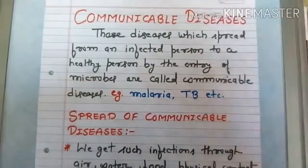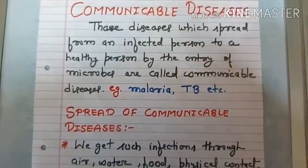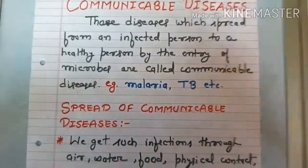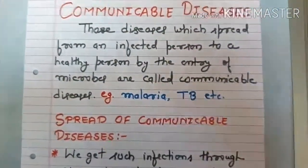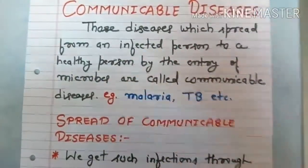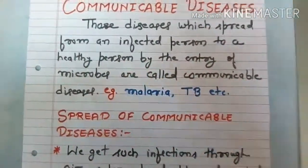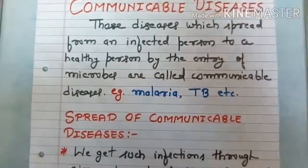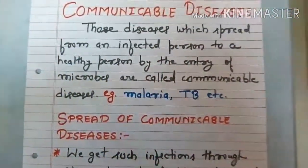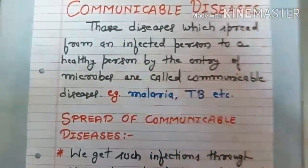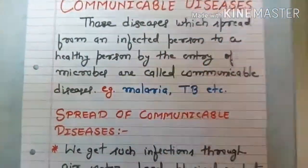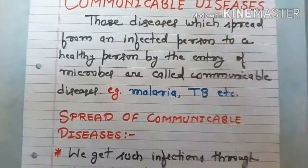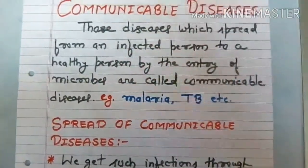Communicable diseases are those diseases which are spread from an infected person to a healthy person by the entry of microbes. In this video we will see diseases caused by virus, bacteria, fungi, worms, etc. Examples of communicable diseases include malaria, pneumonia, tuberculosis, elephantiasis, and many others.